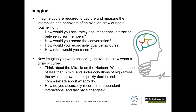Now imagine you're observing an aviation crew when a crisis occurred, for the purposes of improving an error management system. Think about the Miracle on the Hudson, in which a US Airways flight had to land in the Hudson River in New York after the plane's engine failed due to a collision with a flock of geese. Within approximately five minutes and under conditions of high stress, the team had to quickly decide and communicate — identifying the incident, declaring it, and assigning roles. How would you accurately record these time-dependent interactions in this fast-paced environment?